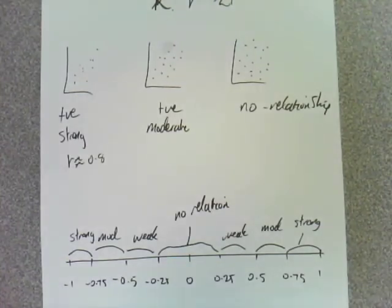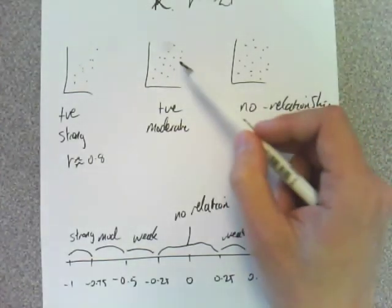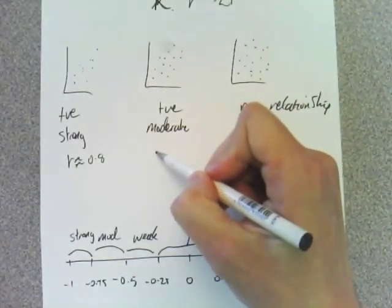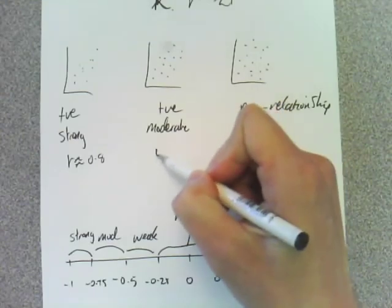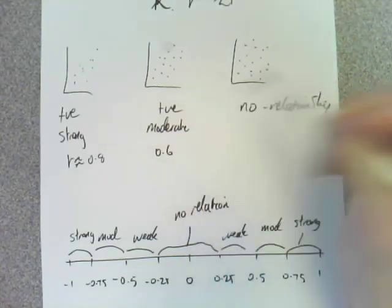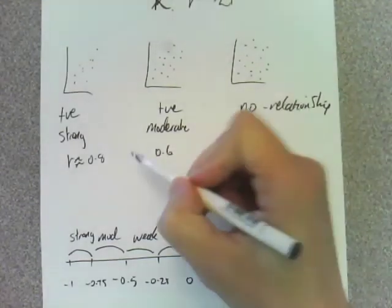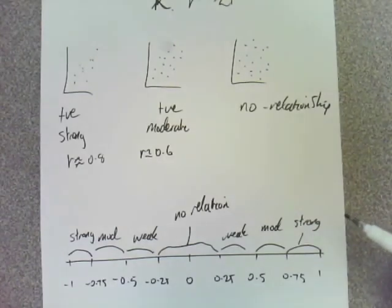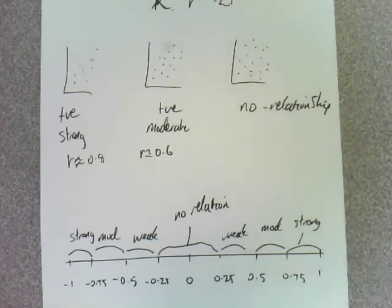That's all this exercise is, guys. That's how easy it is. You come across the graph and you say, well, that's a moderate one, so let's say that one is probably positive, about 0.6. R is approximately 0.6. That's all 2F is. Easy enough? I reckon you guys can do that one easily.